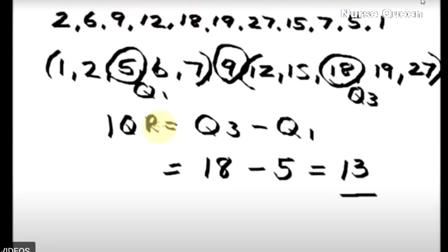This one is the center. The center is Q1, and the center of the upper half is Q3. The interquartile range is Q3 minus Q1. We will see the interquartile range.